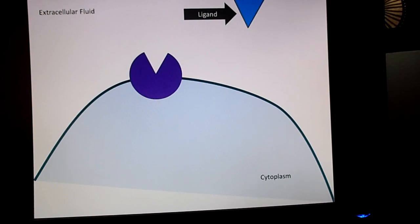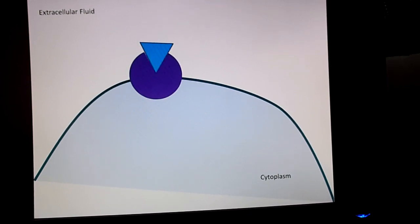A ligand is a general term for any molecule that will attach to a larger one. So the ligand, the signaling molecule, travels to the body and attaches to a receptor protein. Now the ligand and the receptor protein are like a lock and key. They fit very specifically and very perfectly together.